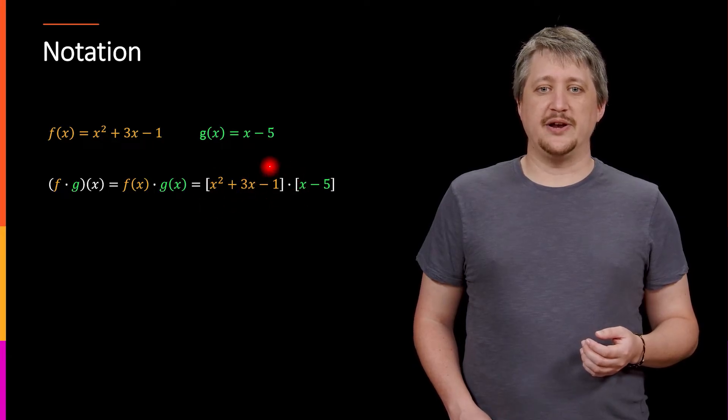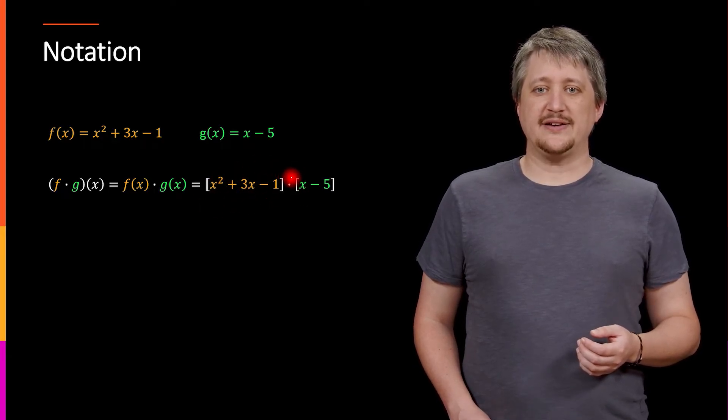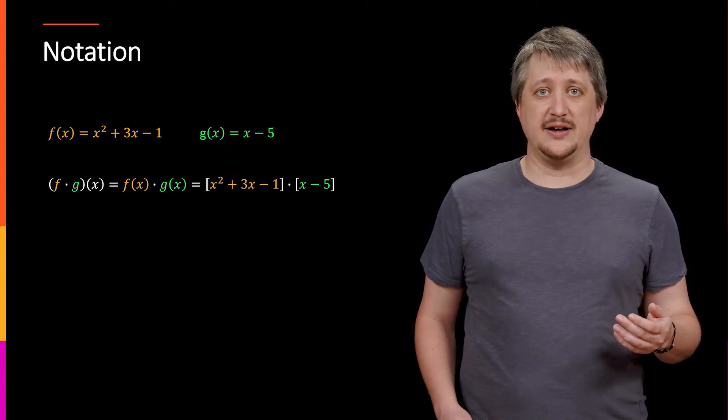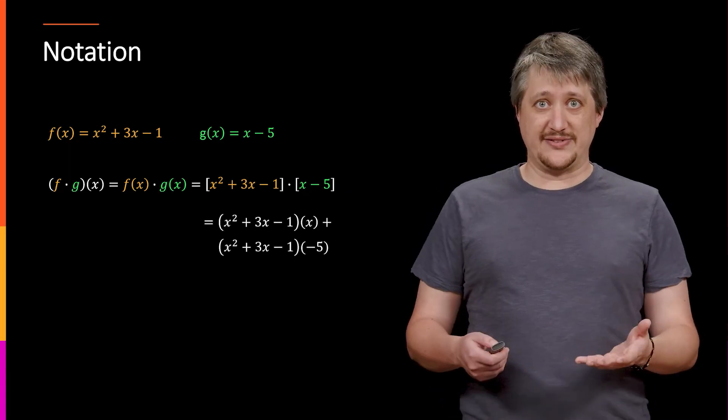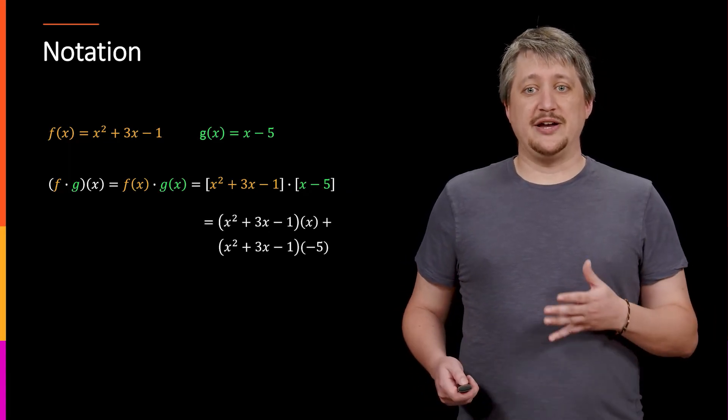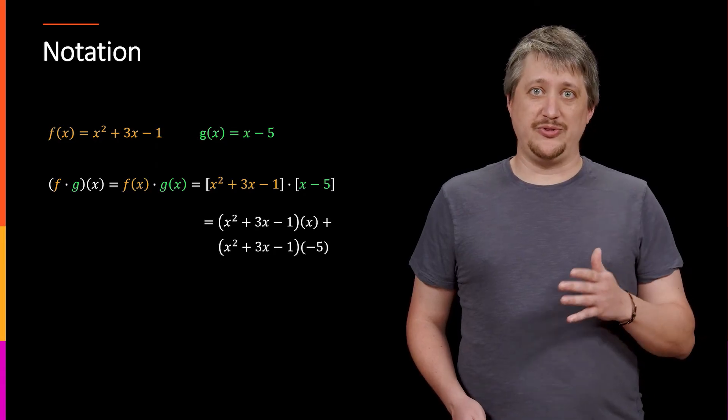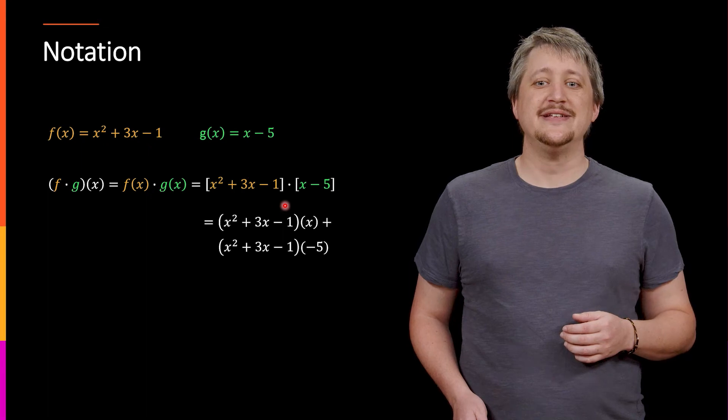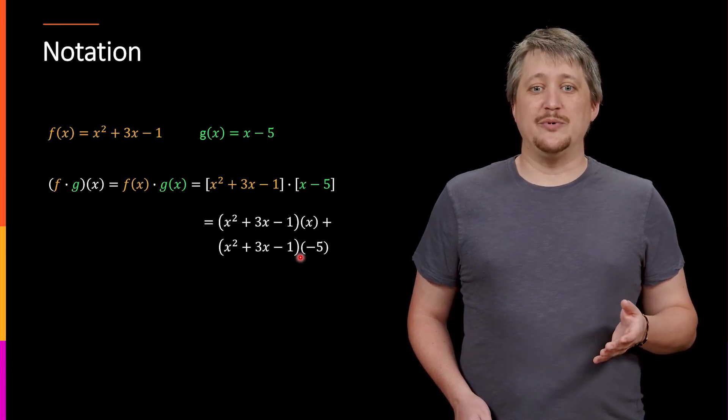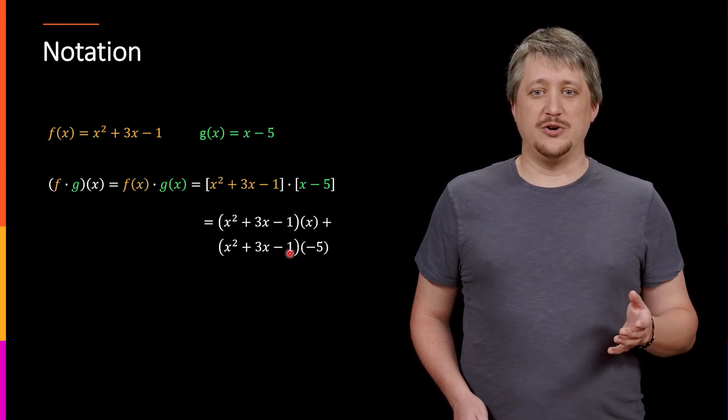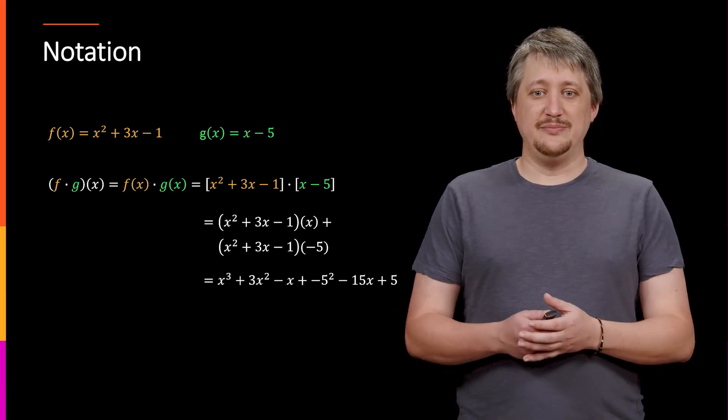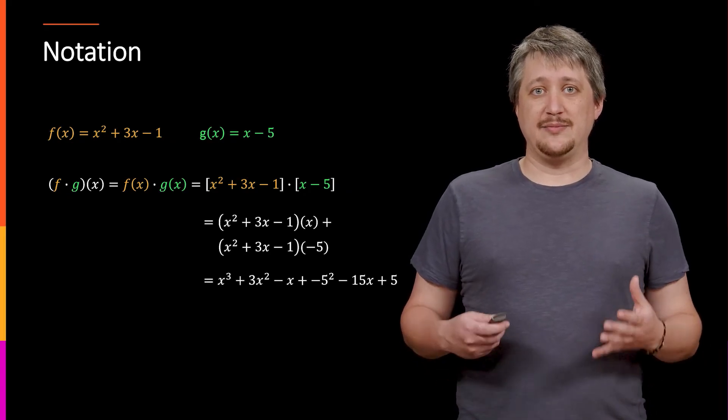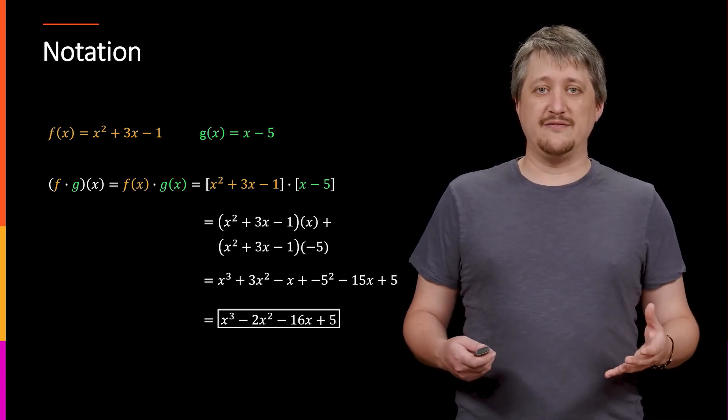So I'm going to take this x² + 3x - 1, multiply it against the x, and then take the same thing, multiply it against the -5. So that gets me this thing. And then as my next step, I do the same process, but I'm going to go the other direction. So I'm going to take this x, multiply it against the x², the 3x, and the -1. And then I'm going to take the -5, multiply that against the x², the 3x, and the -1. That will get me this expanded form, and then I can collapse everything back together and get my final simplified version.